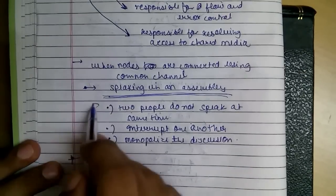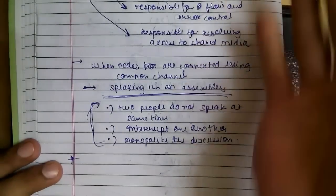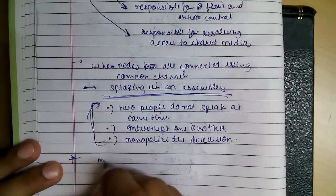There are some rules in an assembly and protocols should be followed to manage it. People are given a chance to speak, then another person speaks. Similar for multipoint networks, many formal protocols have been devised.